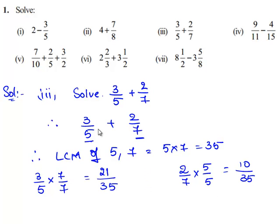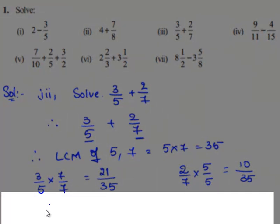So instead of adding 3 by 5 and 2 by 7, we shall add their equivalent fractions that is 21 by 35 plus 10 by 35.